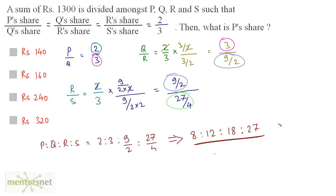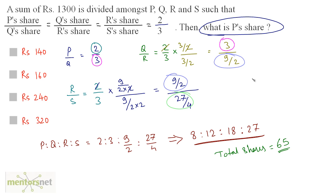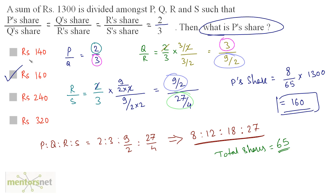The total shares equal 8 plus 12 plus 18 plus 27 which is 65. P's share is 8 out of 65 shares. So P's share equals 8 by 65 times 1300, which equals 160. So our answer is option B.